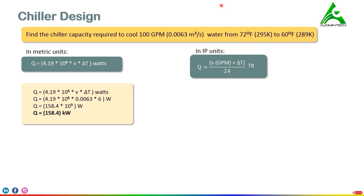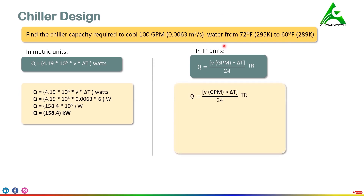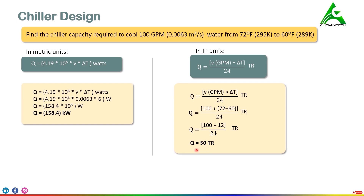Now let's solve the same problem in IP units. We substitute V = 100 GPM. The temperature changes from 72°F to 60°F, so delta T = 12°F. Using the formula: 100 × 12 divided by 24, the final answer is 50 tons.